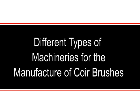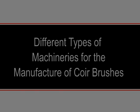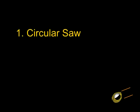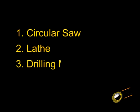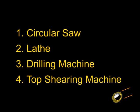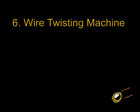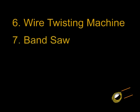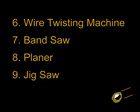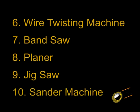Different types of machines used for the manufacture of coir brushes include: 1. Circular Saw, 2. Lathe, 3. Drilling Machine, 4. Top Shearing Machine, 5. Hand Liver Shear, 6. Wire Twisting Machine, 7. Bandsaw, 8. Planer, 9. Jigsaw, and 10. Sander Machine.